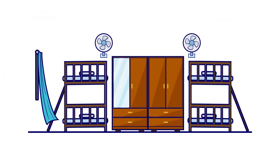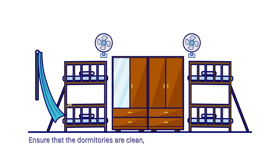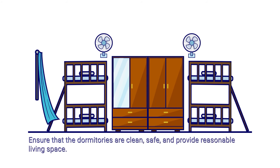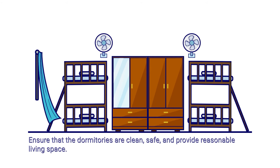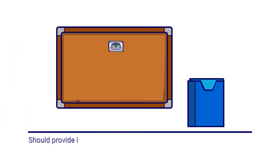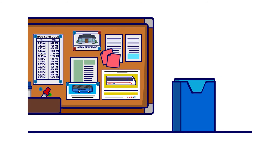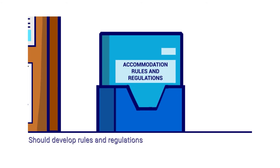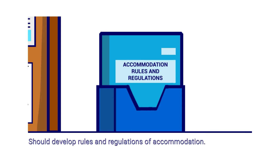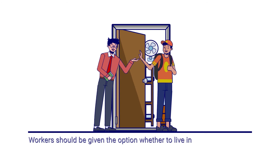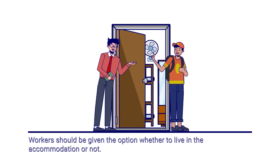If accommodation is provided by employers, the employer should ensure that the dormitories are clean, safe, and provide reasonable living space in compliance with Act 446. Employers should provide workers with information about accommodation, any cost involved, and transport options to and from the factory. Employers should develop rules and regulations for the accommodation, and migrant workers should be given the option whether to live in the accommodation or not.